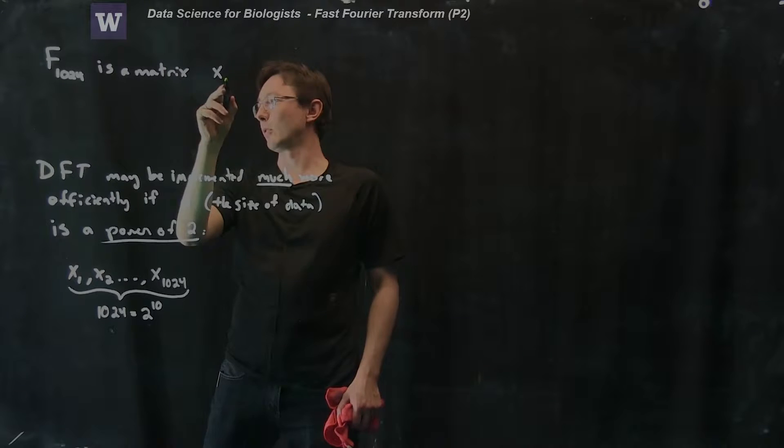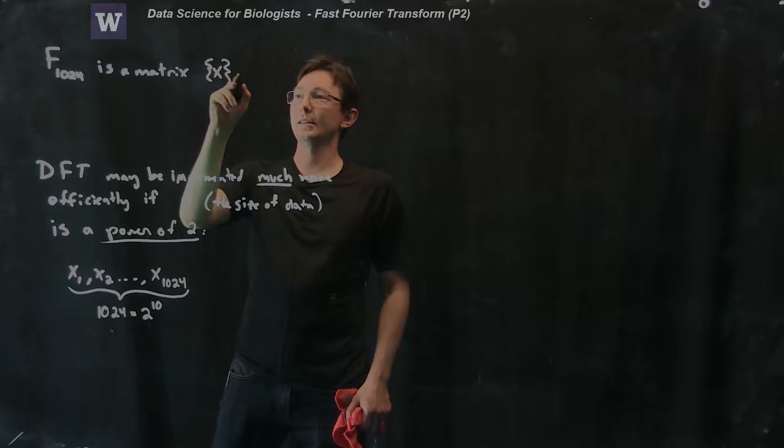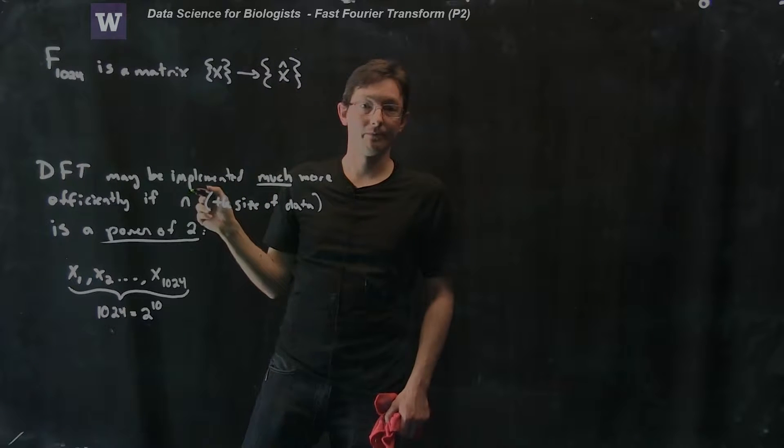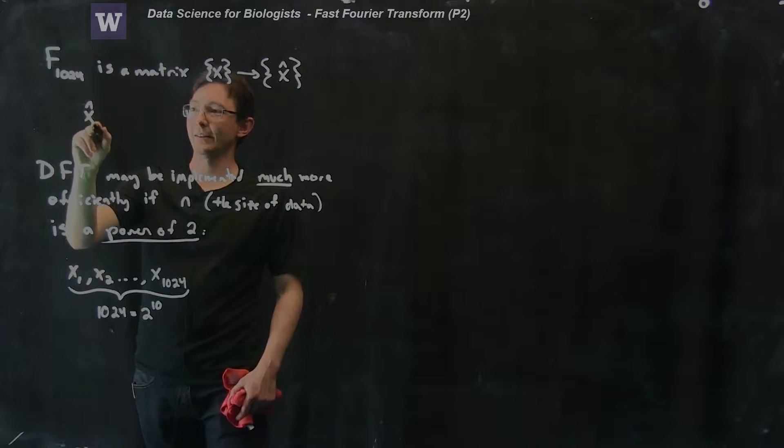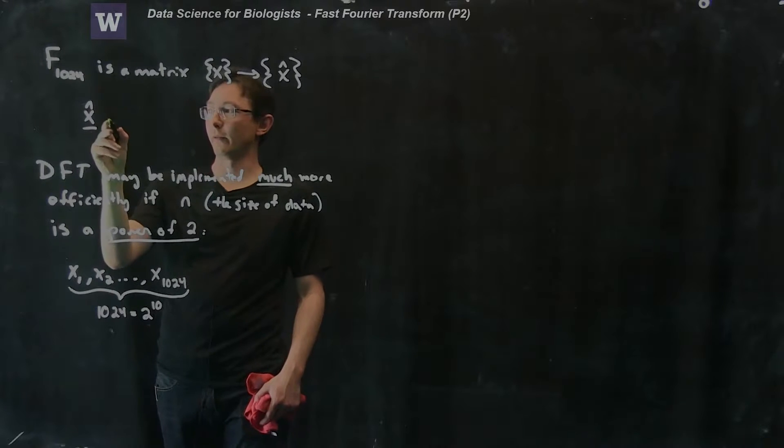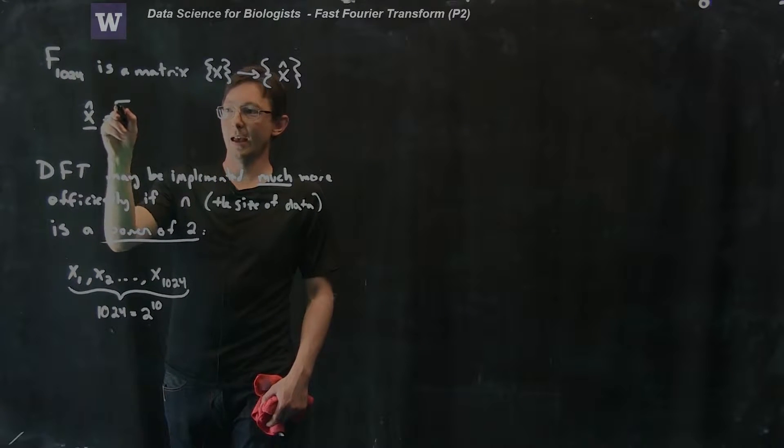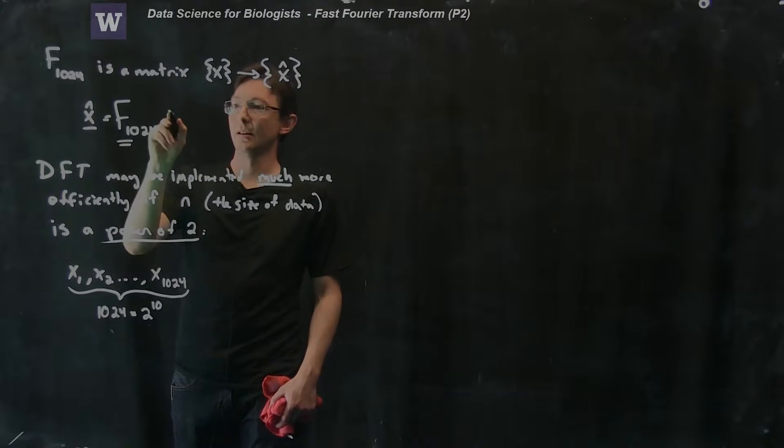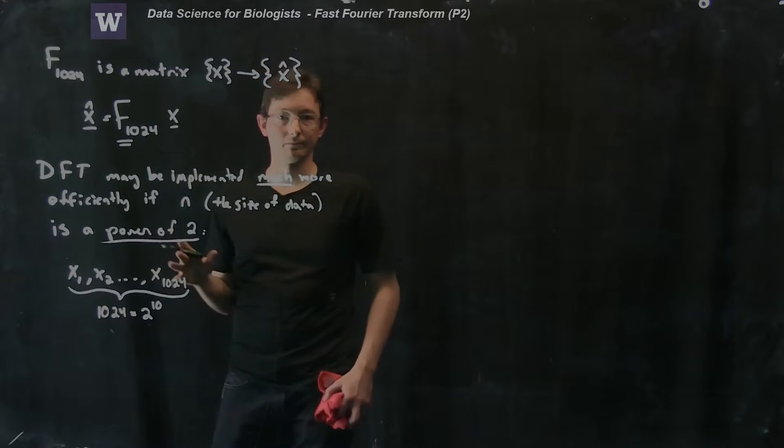F is a matrix that takes my data X, all this data in X, and it gives me Fourier coefficients X hat. We would say that X hat, this big vector of Fourier coefficients, is F1024, this big matrix, times my data X.